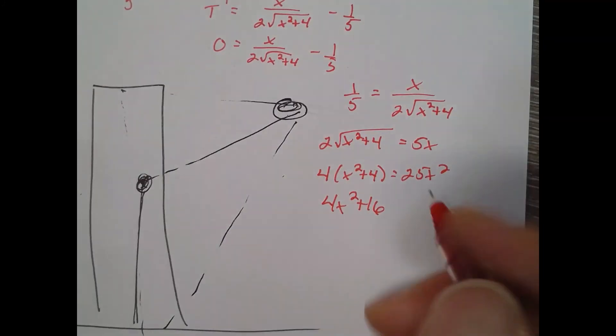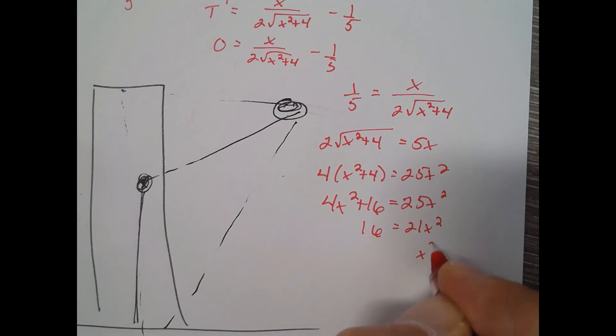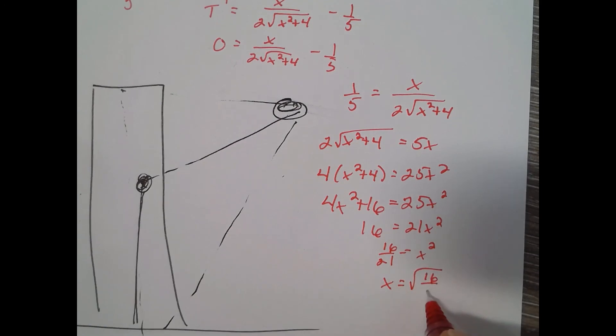At least there's no x term. So I've got 16 equals 21x squared, so x squared equals 16 over 21. So x would be—we don't need the negative—square root of 16 over 21.